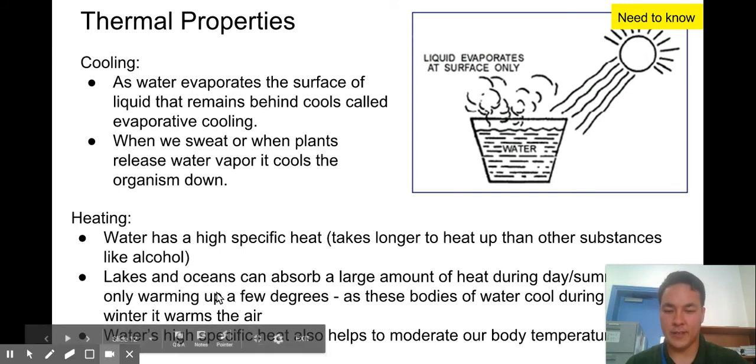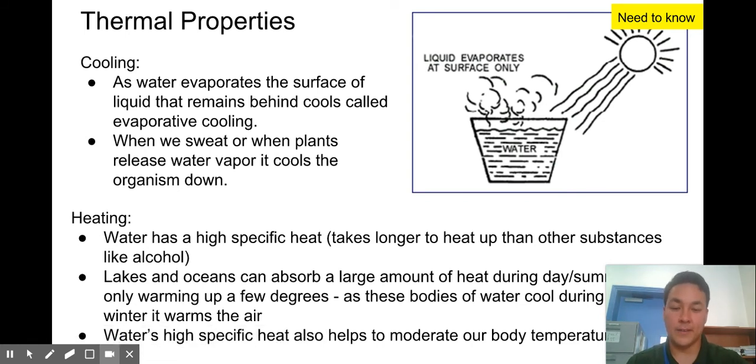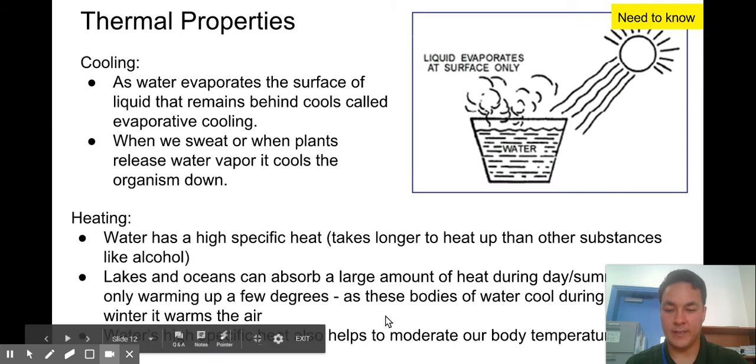This is important. Lakes and oceans can absorb a large amount of heat during the day, only warming up a few degrees. So therefore, those wild fluctuations in temperature won't, they won't have wild fluctuations in temperature. So hopefully that'll help keep fish alive and those ecosystems.